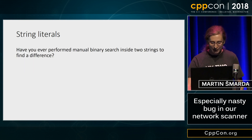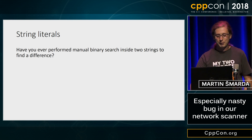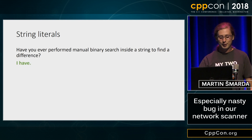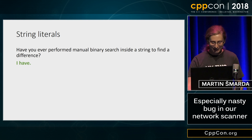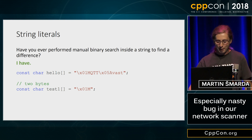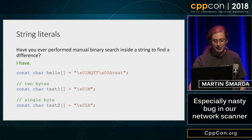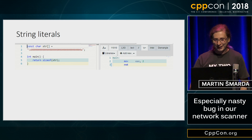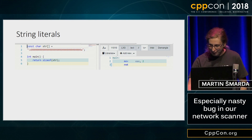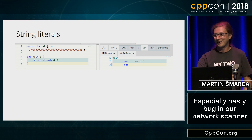So what's happening here? Have you ever performed a manual binary search comparing two strings trying to find the difference? Well, I have. It's not fun. It turns out that the first byte, the first section `\x01N`, is actually two bytes long plus a trailing zero. While the second string — the magic string we have — is actually one byte plus a trailing zero. Nice catch, C++. How many of you knew that? I didn't.